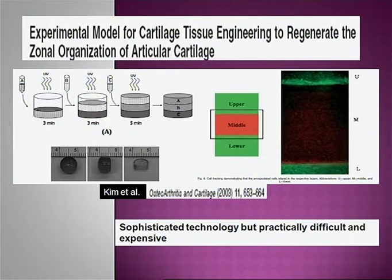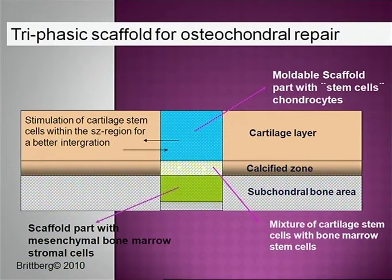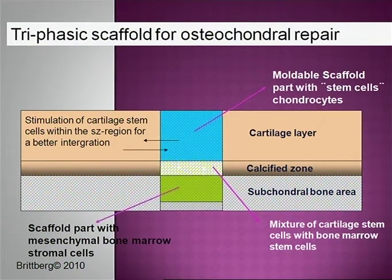My philosophy for the future of cartilage repair is that you need a combination of both committed chondrocytes and bone marrow cells — two different types of cells in different layers. Committed chondrocytes go in the cartilage layer, bone marrow stem cells in the bony layer, with a mixture at the interface. This produces the calcified zone because bone marrow stem cells express different types of cartilage compared to committed chondrocytes. You also stimulate cartilage stem cells in the superficial zone alongside the implanted cells for better integration.